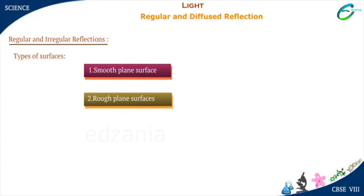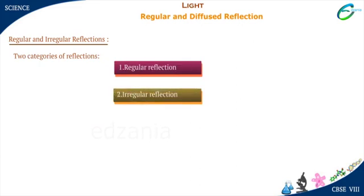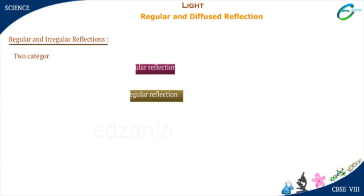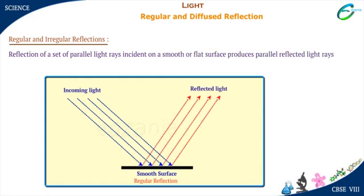The reflection of light from these two types of surfaces gives rise to two categories: regular reflection and irregular reflection. Reflection of a set of parallel light rays incident on a smooth or flat surface produces parallel reflected light rays. Such type of reflection is called regular reflection. Images formed by regular reflection are always clean and distinct.